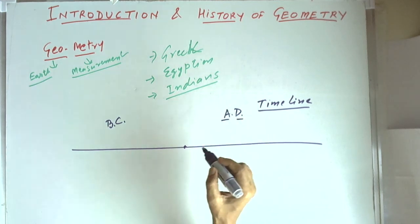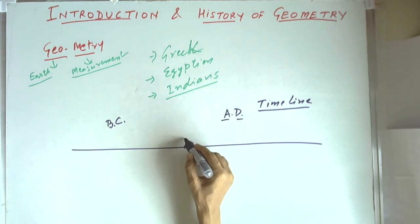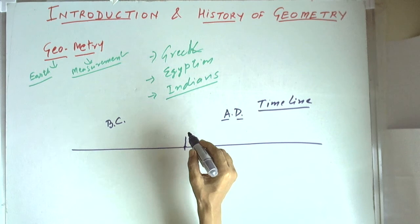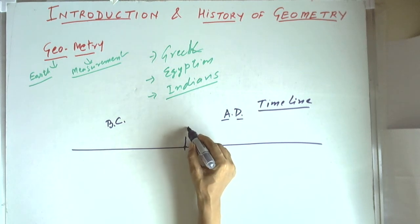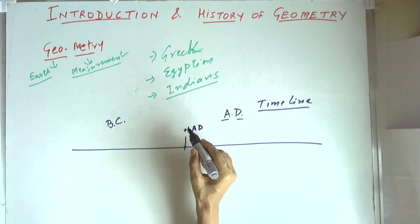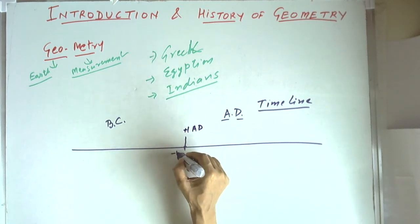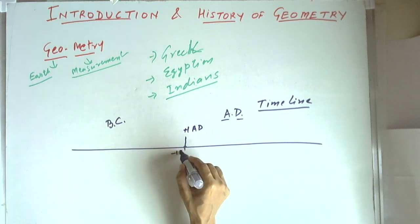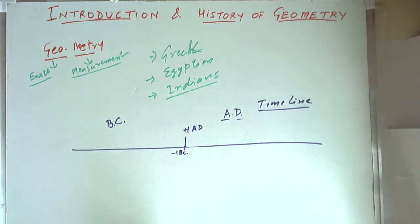The first year in which Christ was born is called year 1 AD. The year preceding this was minus one and that is denoted by before Christ, so there is no zero year.